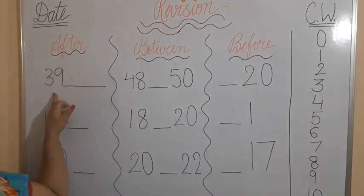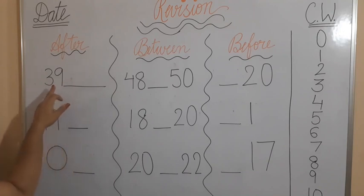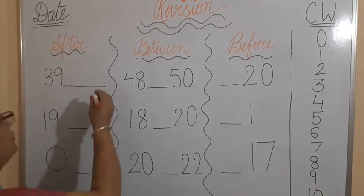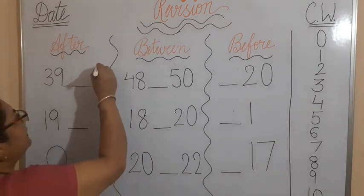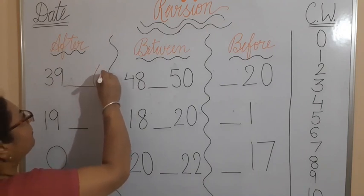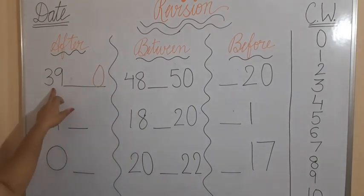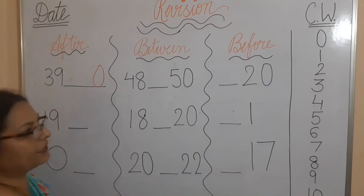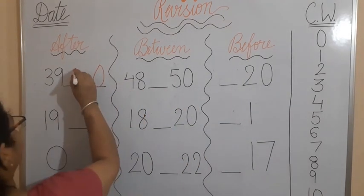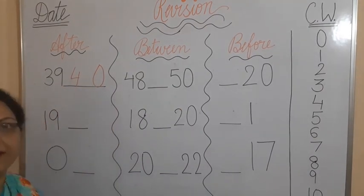The first example is 39. Do you know what comes after 39? 9 is here. If the 9 is here, what will you do? You write the 0 in place of 9. Then you have to see the first digit. What comes after 3? It is 4. You have to write here 4. 40 comes after 39.